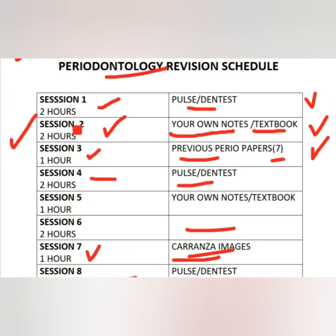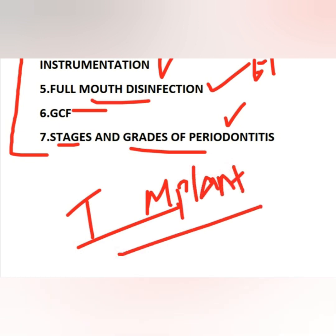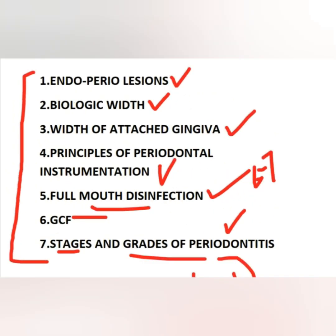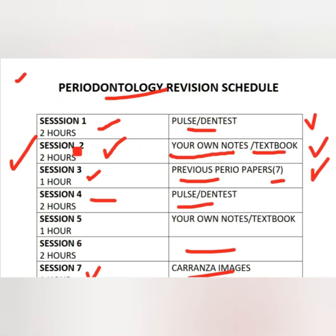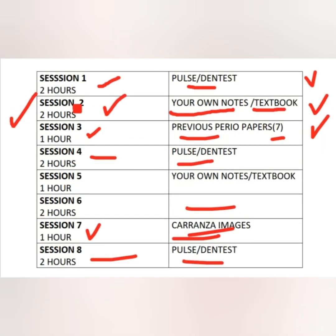One more thing: implantology. There is a good chapter on implantology in Dentist — just revise that, which is more than enough. A PDF is also available for that — just DM me. You have around 80 MCQs on implantology. These are the seven to eight topics that are very important and might be missed in Dentist or Pulse. Also have a look at the newly discovered tuberial salivary gland. If you follow this timetable, you can definitely finish periodontology in one day. Revise well, and thank you for watching — please share with your friends if it was helpful.